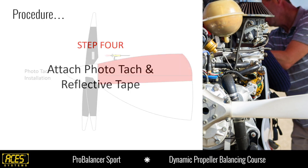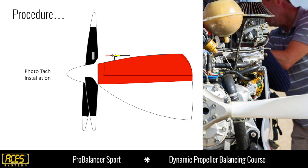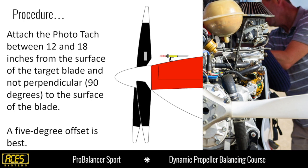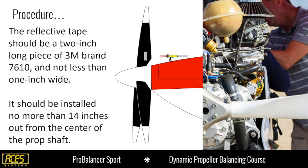Attach the photo tach and reflective tape. The photo tach is usually offset slightly — usually to the right of the analyzer, between 12 and 18 inches back, facing the reflective tape. There's a reason for the offset: it helps with the angle of the photo tach beam for a better reading. Place the reflective tape 14 inches from the center of the shaft out. We recommend 3M brand 7610 reflective tape. At ACES Systems, we've tried many tapes over 40 years and found this one doesn't slip or slide down the prop after heating up, giving you a better result.